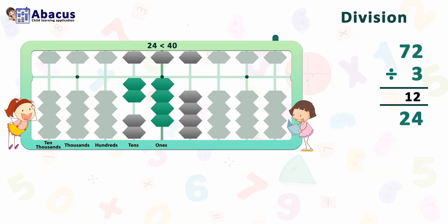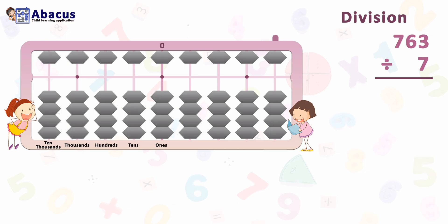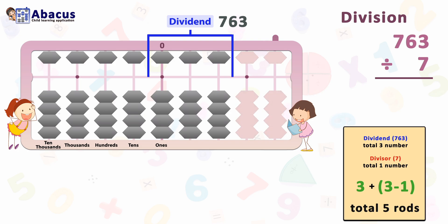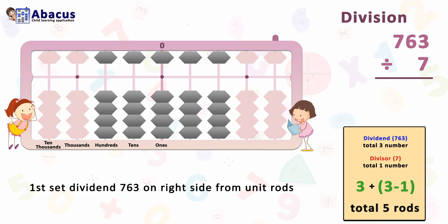Let's reset the abacus and go to the next example. Let's see the example of a three digit dividend with one digit divisor: 763 divided by 7. We follow the same process. Dividend 763 has three digits and divisor 7 has one digit. So 3+3−1=5, meaning we use five total rods. Three rods are for dividend 763 and two rods to the left of the unit rod are for the answer. Let's start and set dividend 763 on the right side from the unit rod.